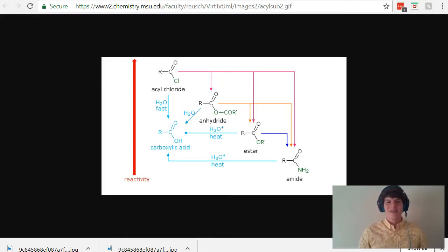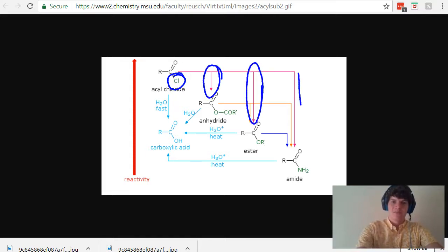For instance, since chloride is such a good leaving group, it will easily be displaced by a water, an alcohol, or an amine. Therefore, you'll notice that it can react to form any one of these products.